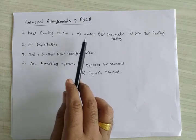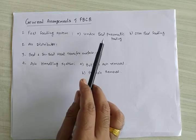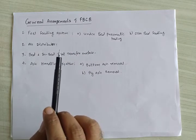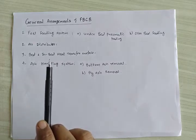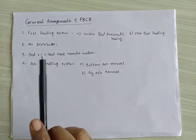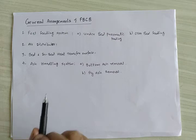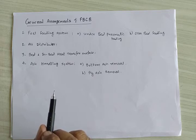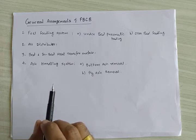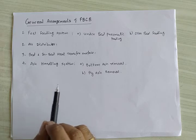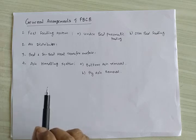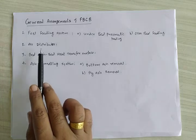In the fuel feeding system, the first type is under-bed pneumatic feeding, where coal is crushed to a size of 1 to 6 mm and pneumatically transported from the feed hopper. The second type is over-bed feeding, which accepts oversize fuel, eliminates the transport line compared to under-bed feeding, and accepts coal of size 6 to 10 mm.